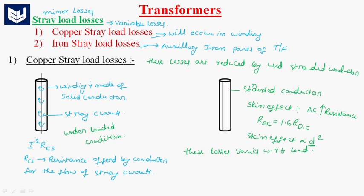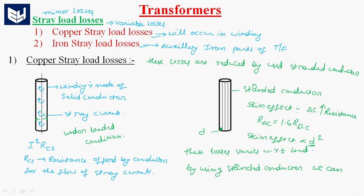Here the diameter of the solid conductor is more, whereas with a stranded conductor, only this smaller area is the diameter — so the diameter of the conductor is less. By using stranded conductor, we can reduce skin effect, and as a result we can reduce copper stray load losses in the transformer.